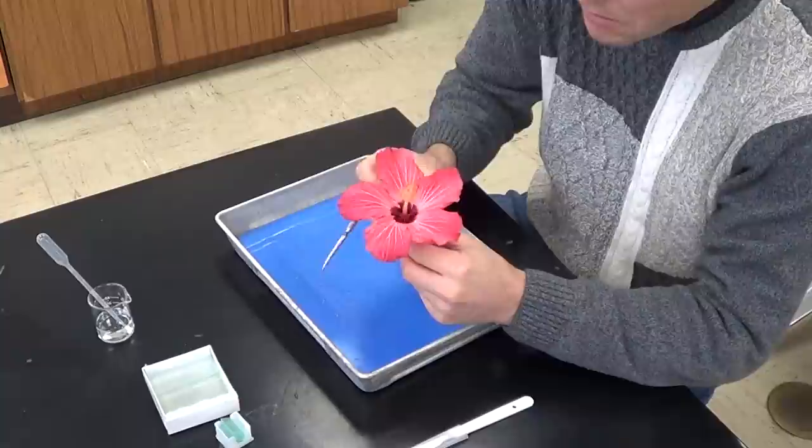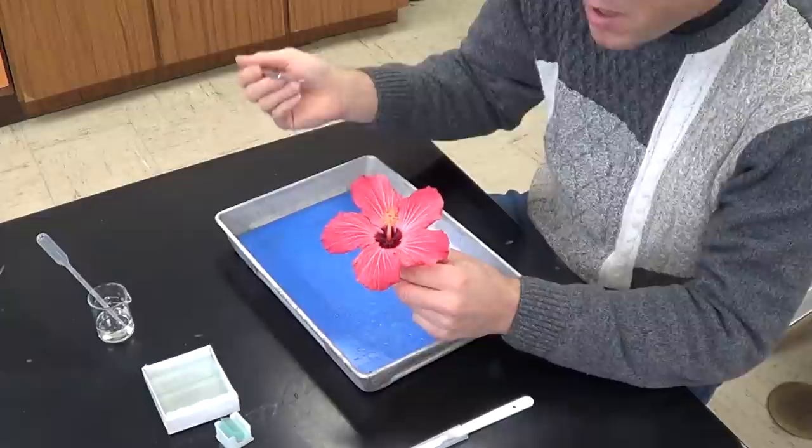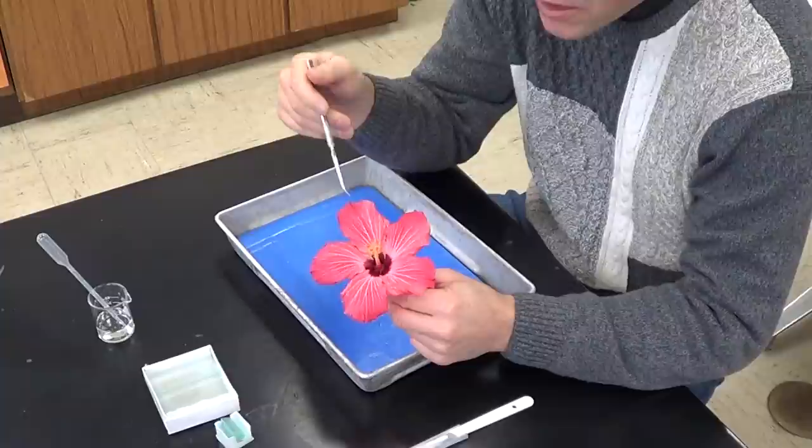Now the next whorl here, the next set of leaves, are going to be the petals, with a T, petals. And we've got one, two, three, four, five petals.